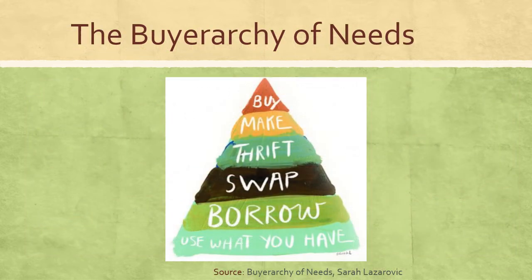One way to reduce our ecological footprint is to reduce our overconsumption. To do so, we can follow the budgerarchy of needs. The budgerarchy looks at buying as the last option, after all other areas have been tried. There are many options to try before buying something, and by following the budgerarchy, we not only help the environment but also our economy. Make good use of what you have and try to extend the useful life of your things as much as possible. If you need something you don't have, try to borrow it. Do you know someone who might have the item and be willing to swap for something you have? There are Facebook groups where you can trade your goods.